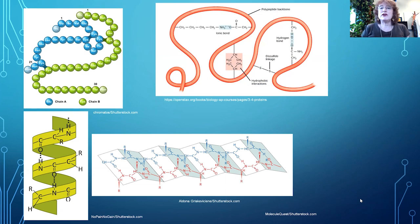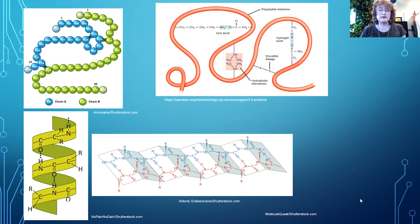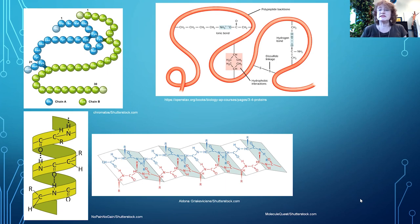Then we have what's called the tertiary structure. The tertiary structure involves interactions between the different R groups in the amino acids. You can have ionic bonds between R groups of different charges. We could have hydrophobic interactions — in the illustration, we have two valines interacting with each other. Disulfide bonds are the only covalent bonds within the tertiary structure, and these are between two cysteine amino acids. We can also have hydrogen bonds between the R groups of the amino acids.